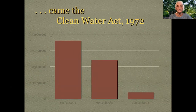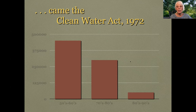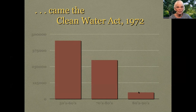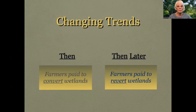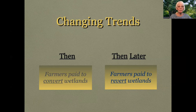The Clean Water Act, the Clean Air Act, and the EPA came in the Nixon administration. With the inception of the Clean Water Act, many fewer wetlands were destroyed. By the 90s, so many fewer were destroyed, and by 2010 the number was 13,000 acres — which is a lot, but considered insignificant for this particular study. There was a time when farmers were actually paid to convert wetlands into farmland; a few years later, we've got farmers being paid to revert them back to wetlands.